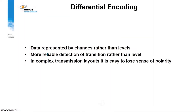Differential encoding: Data is represented by changes rather than levels. More reliable detection of transition rather than level. In complex transmission layouts, it is easy to lose sense of polarity.